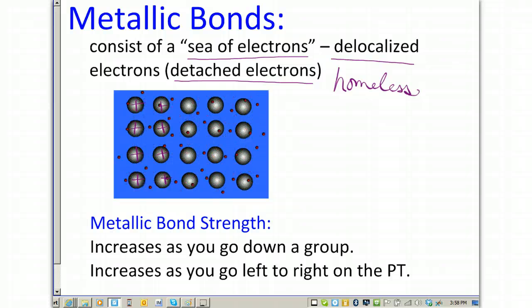Metallic bond strength increases as you go down a group on the periodic table, and it increases as you go from the left to the right on the periodic table.